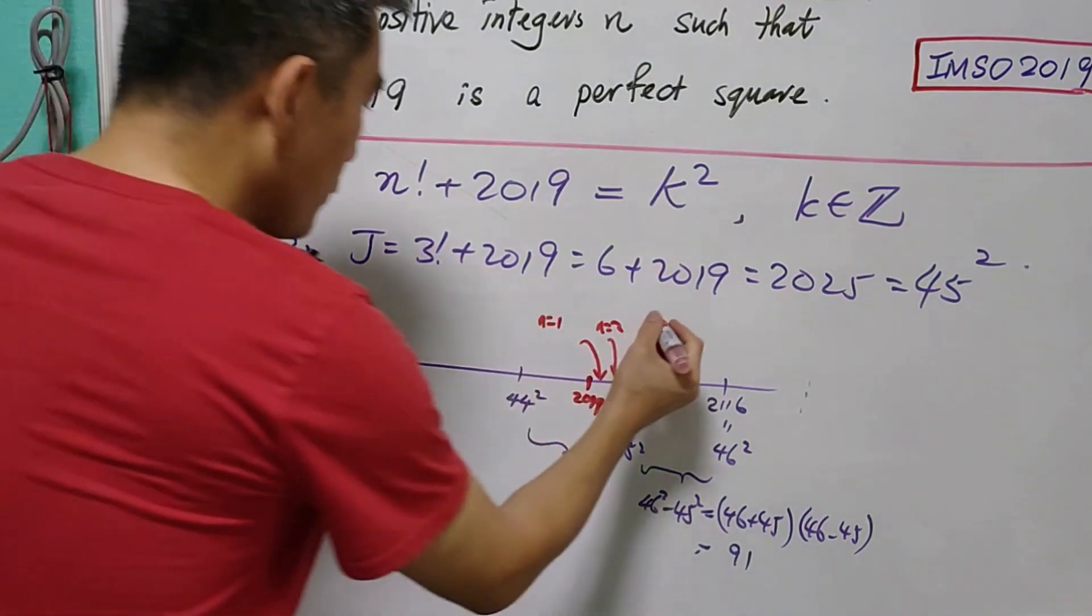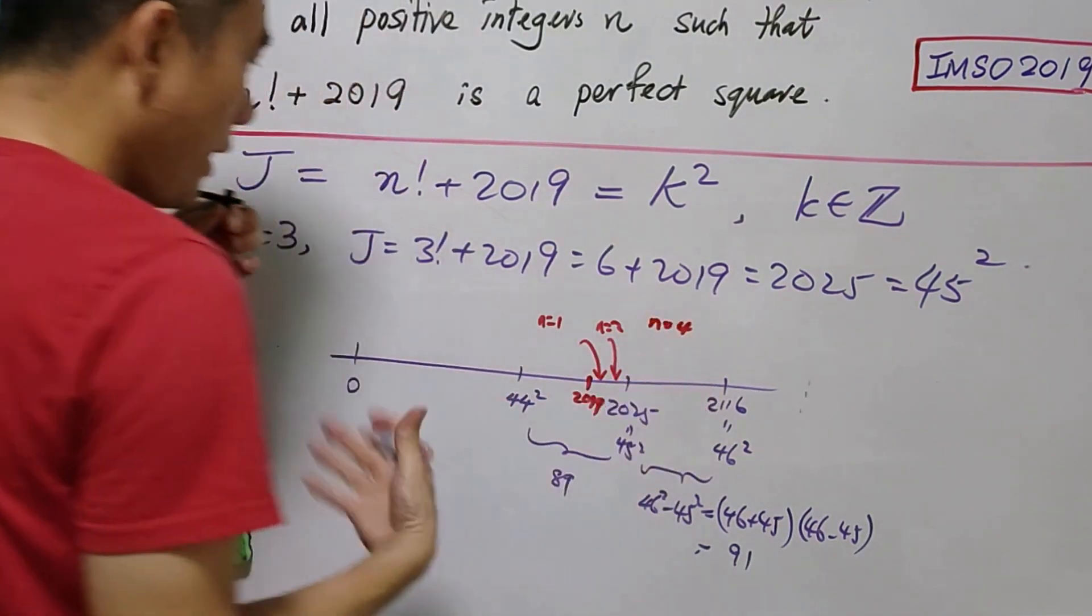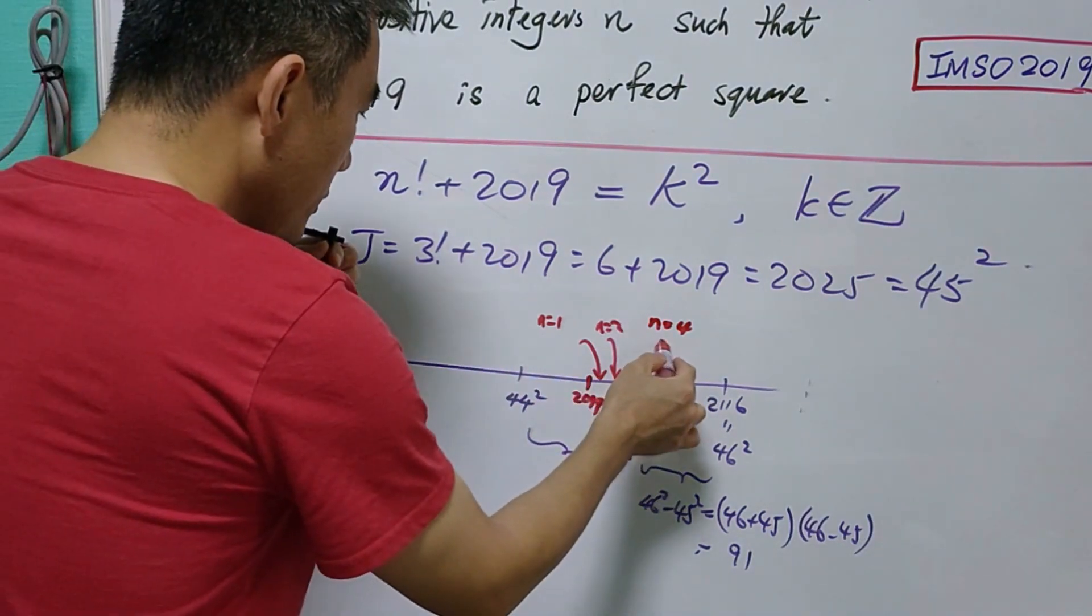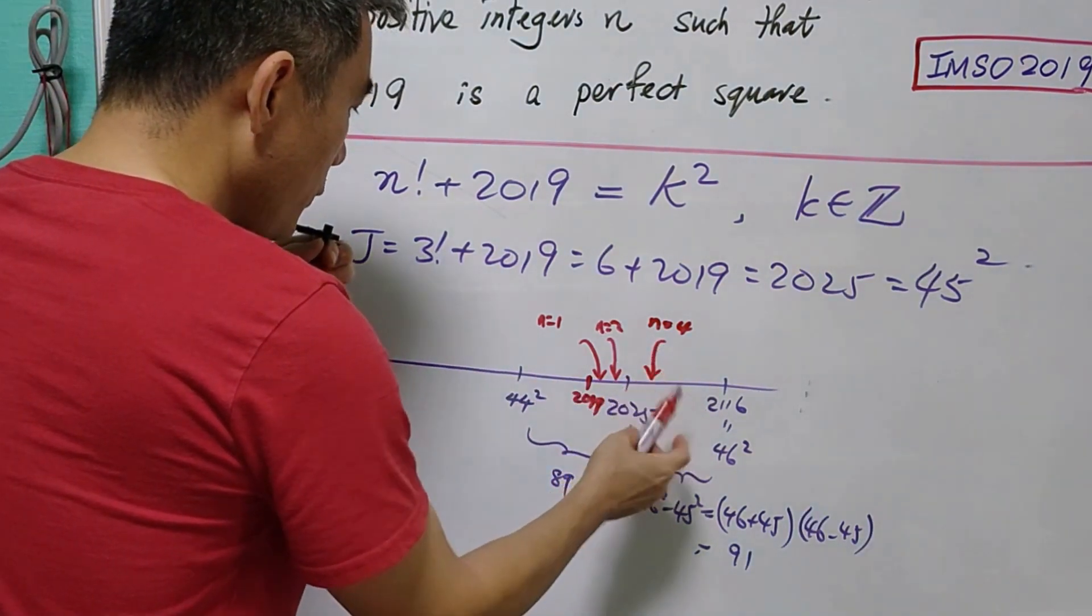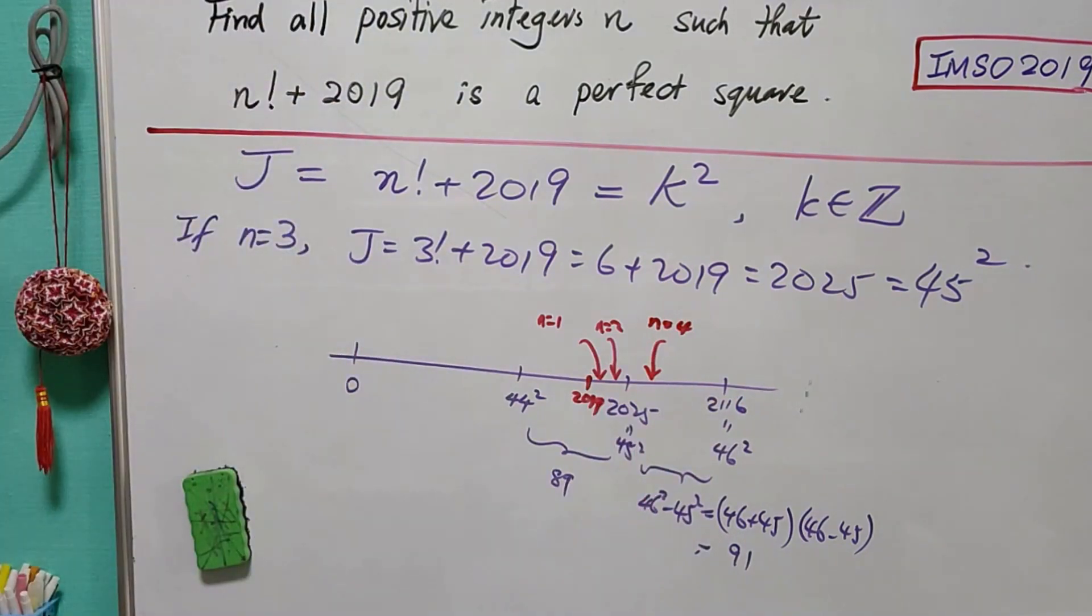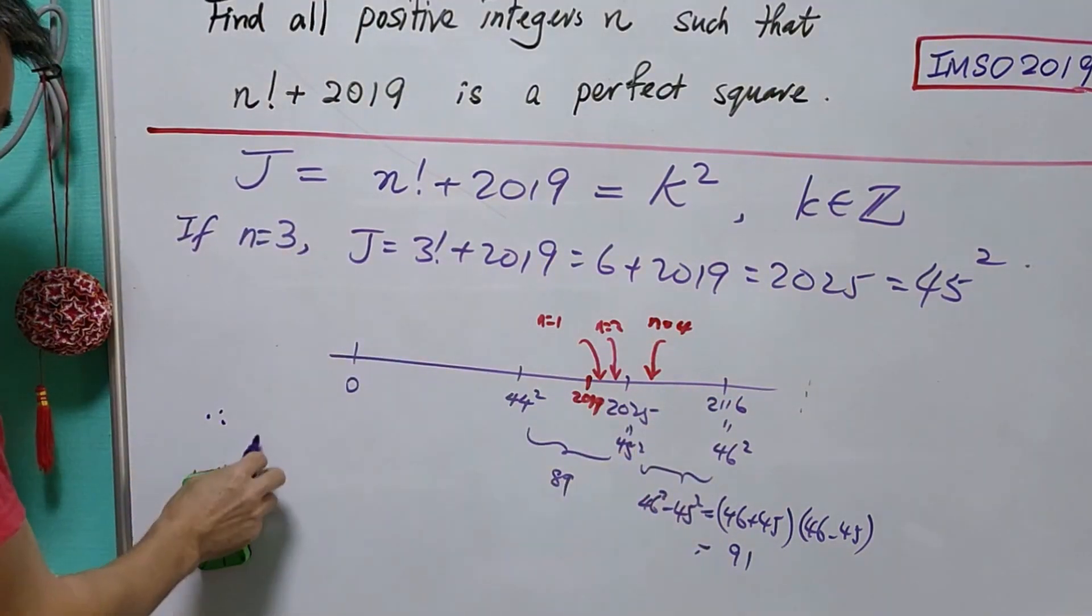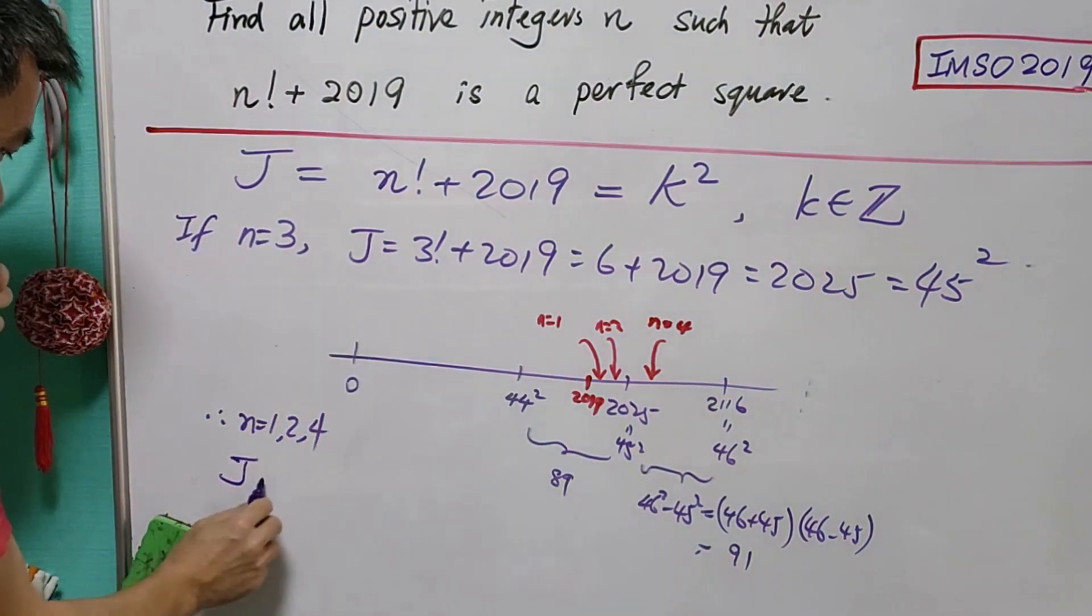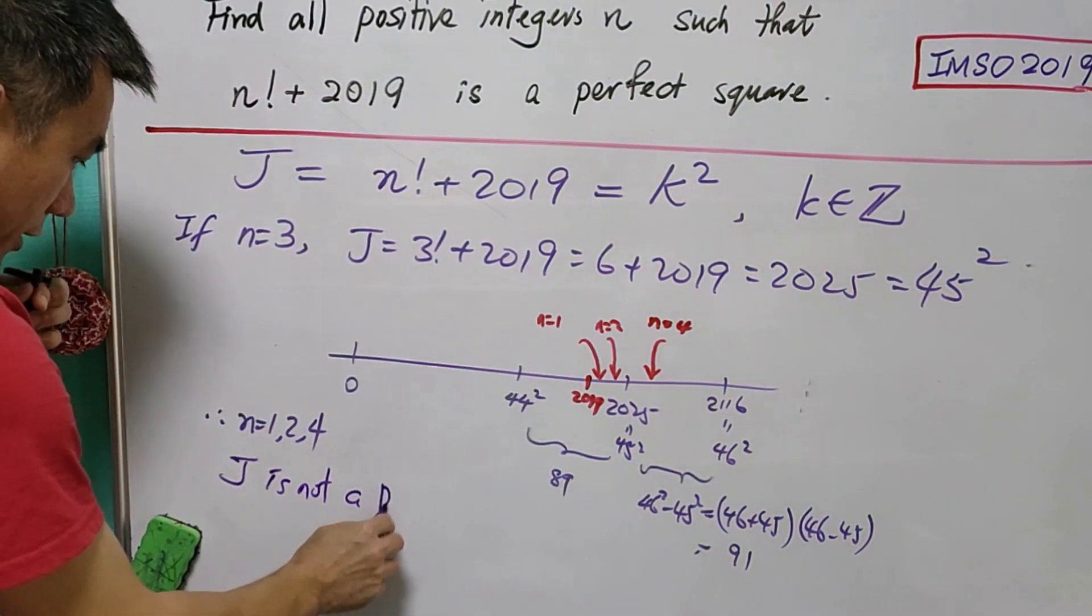How about when n = 4? When n = 4, you can add another 18 to this number, so it will be still within the interval. This means that when n = 1, 2, or 4, j is not a perfect square.